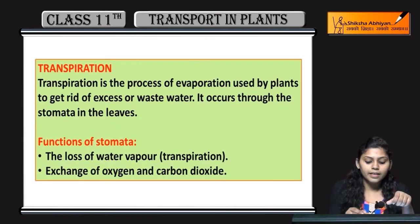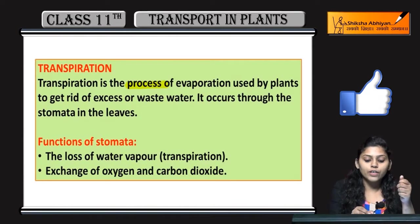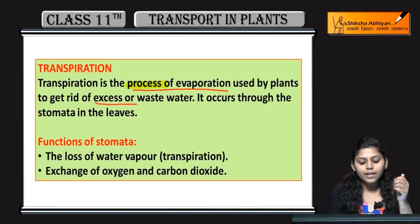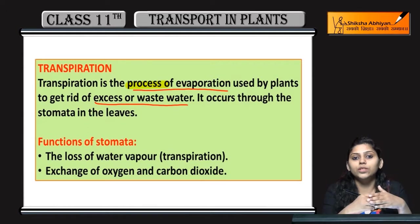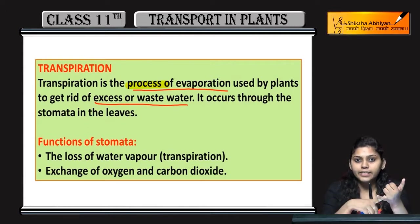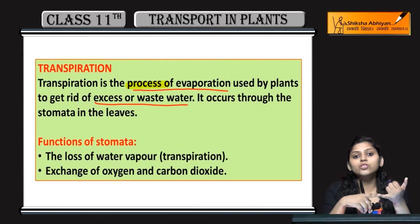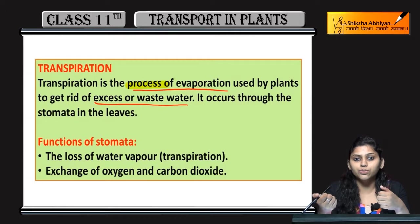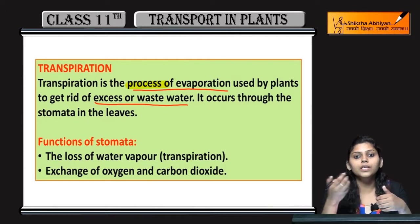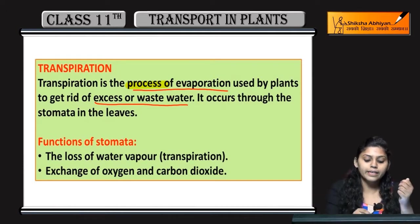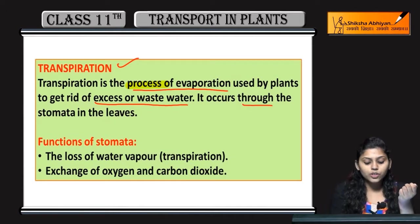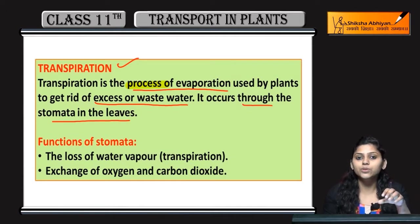Transpiration kya hai — it is the process of evaporation used by plants to get rid of excess or waste water. Jaise human beings mein gaseous exchange hota hai — excess jo bhi waste hai, fecal matter ya urine — uska pass out hona zaroori hai, waise hi plants ke cases mein excess water jo hai woh bhi loss hota hai through the process of transpiration.